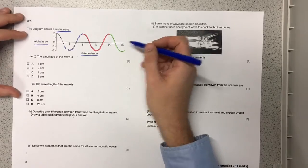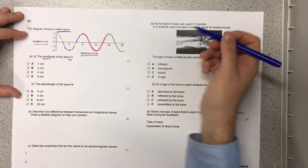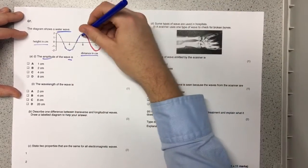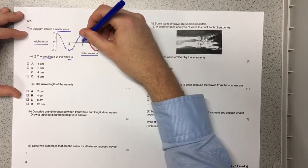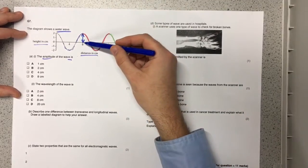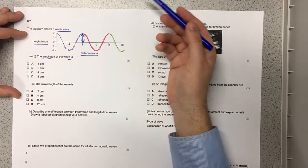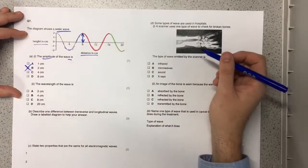So the first question says the amplitude of the wave is and we know the amplitude is this height here from the zero position to the maximum. So the answer is going to be B, two centimeters.